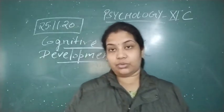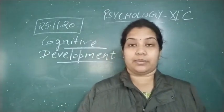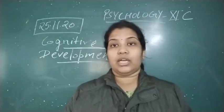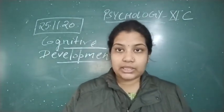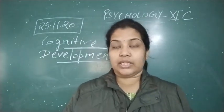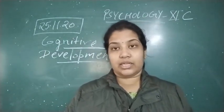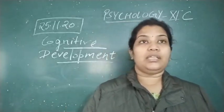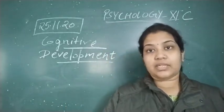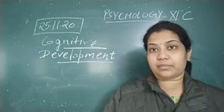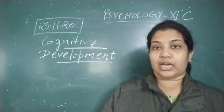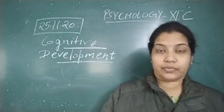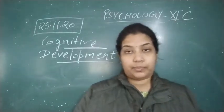Essentially, the adolescent stage is characterised by very abstract thinking, logical thinking, and reasoning. They don't believe in any kind of thing unless and until it has some proof. Piaget called this type of logical thinking 'hypothetical deductive reasoning.'